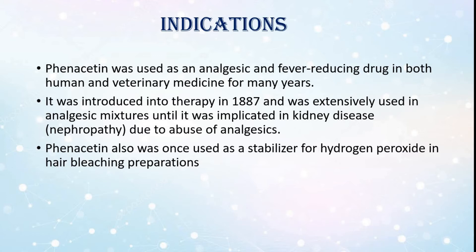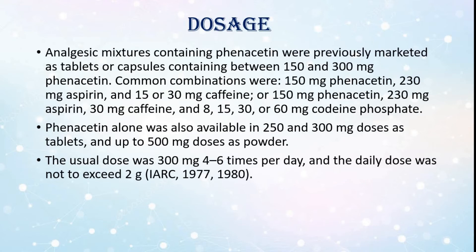Indications: Phenacetin was used as an analgesic and fever-reducing drug in both human and veterinary medicine for many years. It was introduced into therapy and extensively used in analgesic mixtures until it was implicated in kidney disease — nephropathy — due to abuse of analgesics. Phenacetin was also once used as a stabilizer for hydrogen peroxide in hair bleaching preparations.